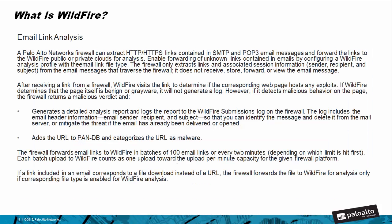Next is email link analysis. A Palo Alto Networks firewall can extract HTTP or HTTPS links contained in SMTP and POP3 mail messages and forward the links to the WildFire public or private cloud for analysis. Enable forwarding of unknown links contained in emails by configuring a WildFire analysis profile with the email link file type. The firewall only extracts links and associated session information — sender, recipient, and subject — from email messages that traverse the firewall. It does not receive, store, forward, or view the email message itself.